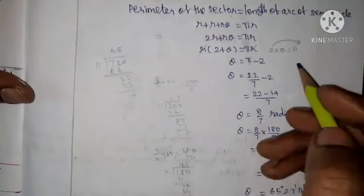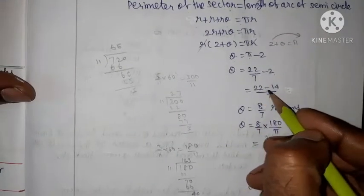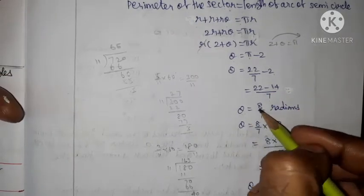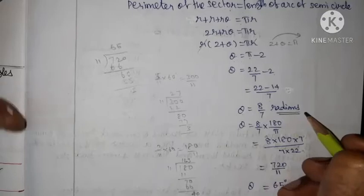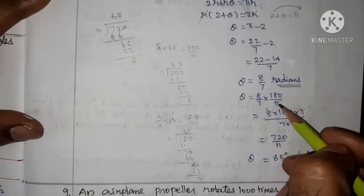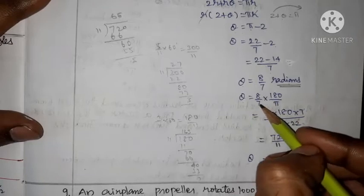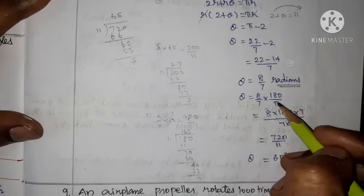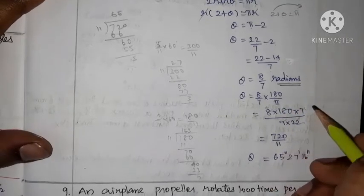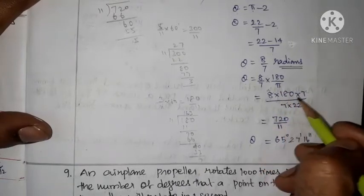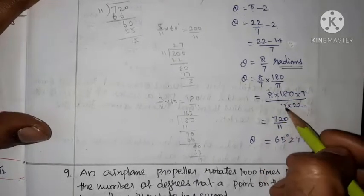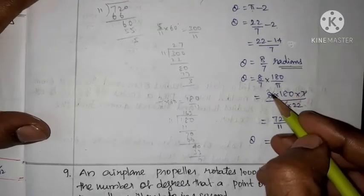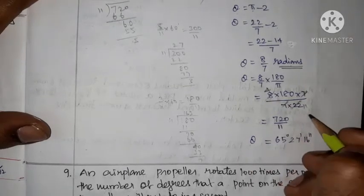Taking a common denominator of 7: theta equals (22 minus 14)/7 equals 8/7. So theta = 8/7 radians. Converting to degrees, theta = (8/7) × (180/pi) = (8/7) × (7/22) × 180. The 7s cancel; 4 twos are 8, and dividing 720 by 11 gives 65 degrees remainder 5.